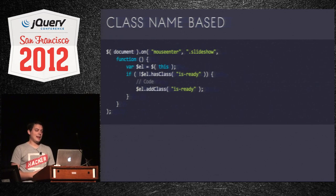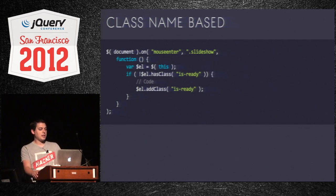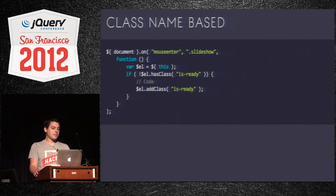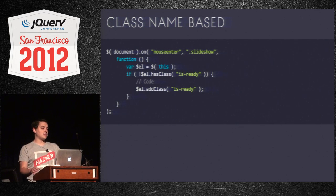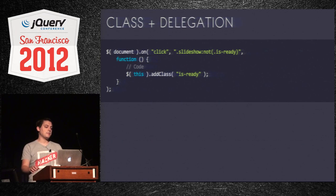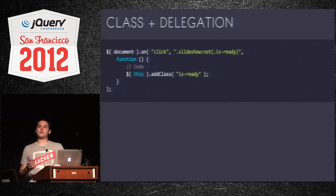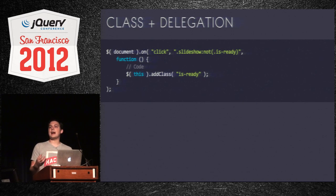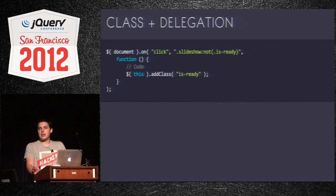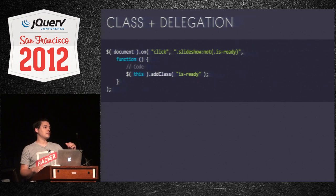My favorite pattern is class-name-based with delegation. You make your delegated event only match when it's not yet set up. In this case: listen for a click inside the slideshow only if it doesn't have class 'isReady.' As long as it lacks that class the callback fires, inside which you set it up and add the class. jQuery UI adds classes automatically so you can leverage those, or explicitly add an additional class. The nice thing is the delegation handle never fires again — we don't have to worry about double initialization because it's already ruled out.